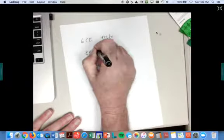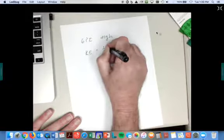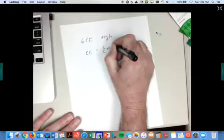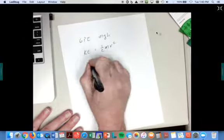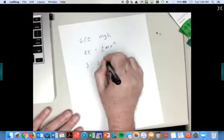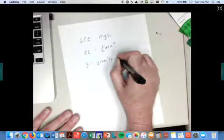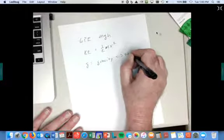Kinetic energy, which is equal to one half the mass times the velocity squared. Now I better start doing, where G is gravity. Okay, G is gravity, which is equal to 9.8 meters per second squared.